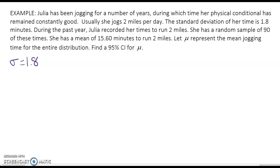During the past year Julia recorded her times to run two miles. She has a random sample of 90 of these times. She has a mean of 15.6 minutes, that's her x bar, to run the two miles. Let mu represent the mean jogging time for the entire distribution.